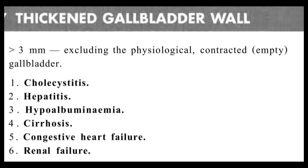In congestive heart failure, all fluid balance becomes disturbed; there will be ascites, and secondary to ascites there will be a thickened gallbladder wall. In renal failure the same applies — there will be a disturbed fluid dynamic, resulting in ascites, and because of the ascites there will be a thickened gallbladder wall. This should not be confused with an inflammatory process; it is not cholecystitis but is secondary to fluid accumulation within the body.